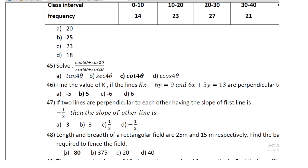Question 42: find the value of k if the lines kx − 6y = 9 and 6x + 5y = 13; the value of k is 5. Question 43: if two lines are perpendicular and the slope of the first line is −1/3, then the slope of the other line is 3.